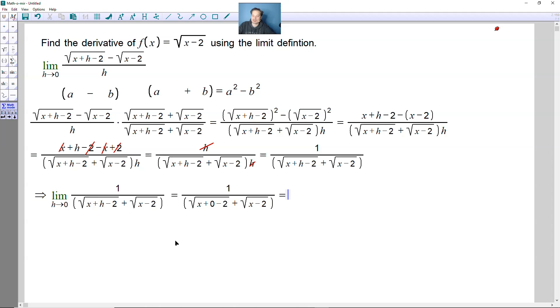And then just simplify this expression here. So it's going to be 1 over the following. For the first part, it's just going to be the square root of x minus 2. For the next part, it's going to be plus another square root of x minus 2. And then you just add them up because there are two of them. So it's going to be 1 over 2 times the square root of x minus 2. And then this is the answer.